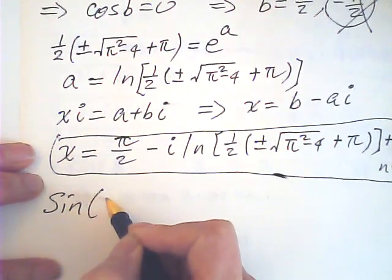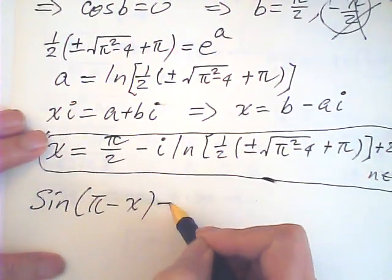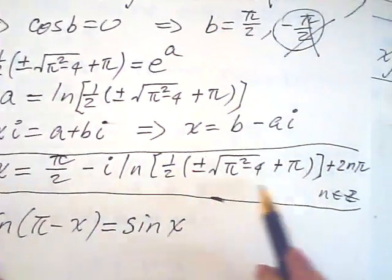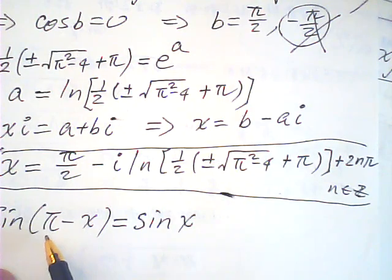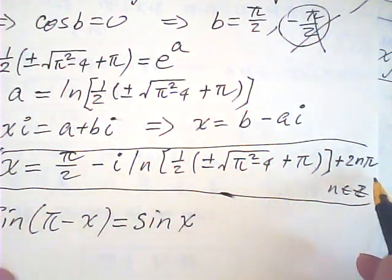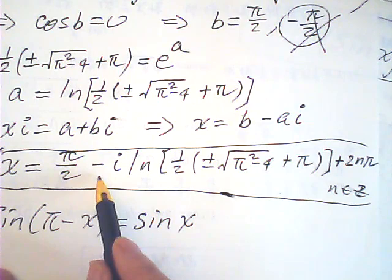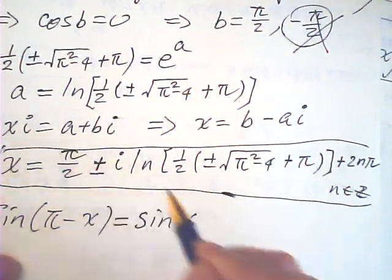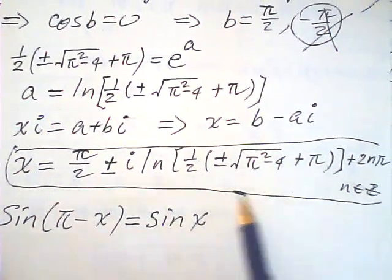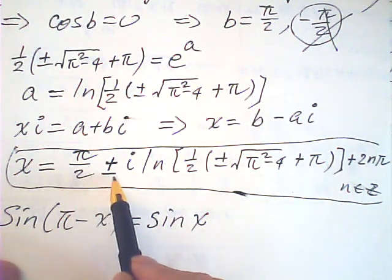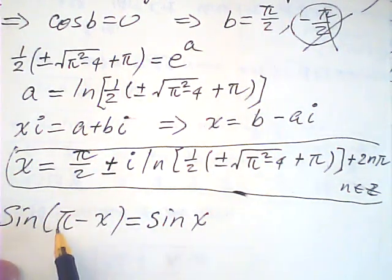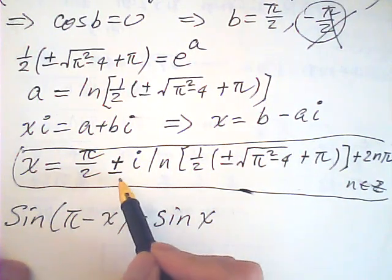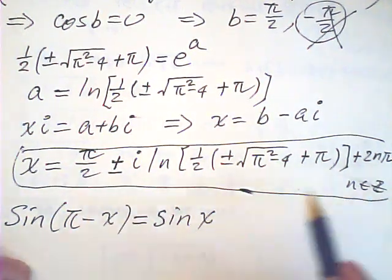The sine of pi minus x is equal to sine x. Therefore, if this is a solution, then pi take away from this is also solution. So pi minus this becomes half pi plus that. Therefore, plus or minus both are solution.